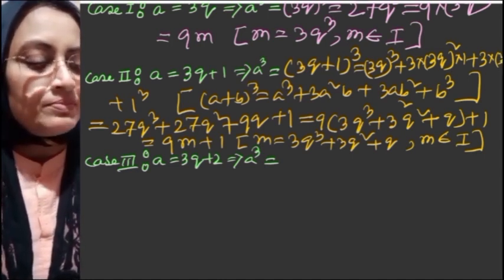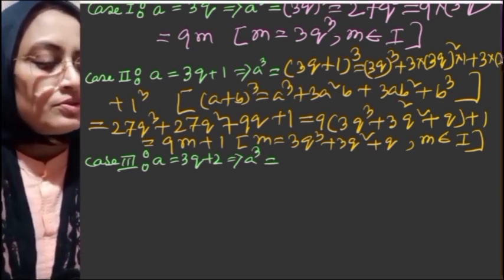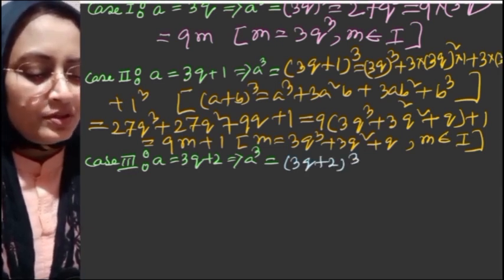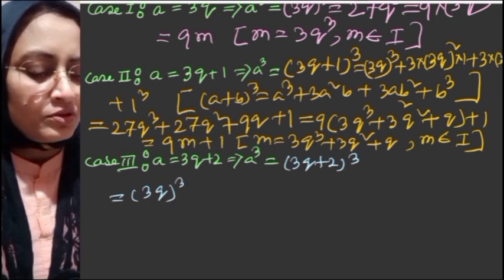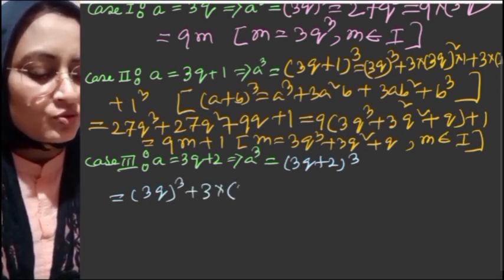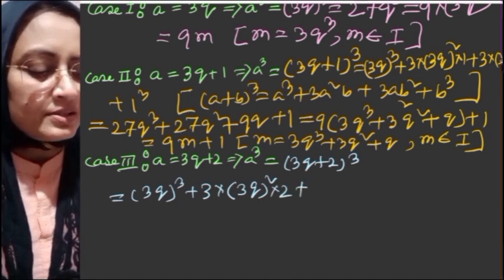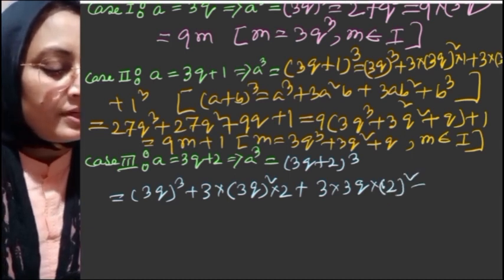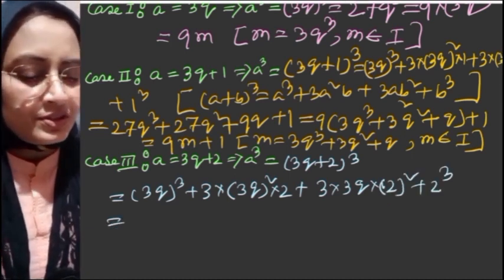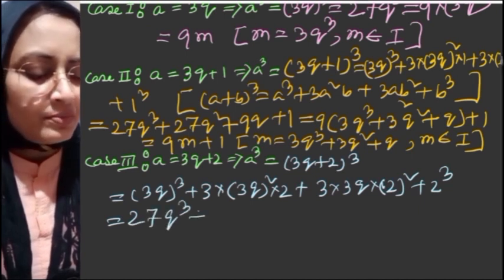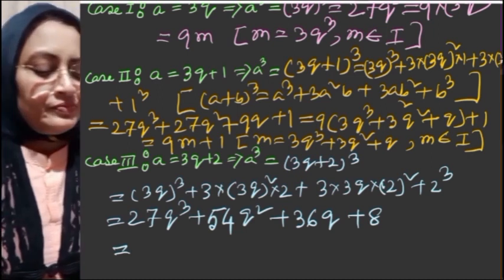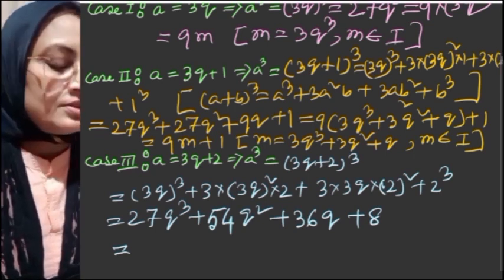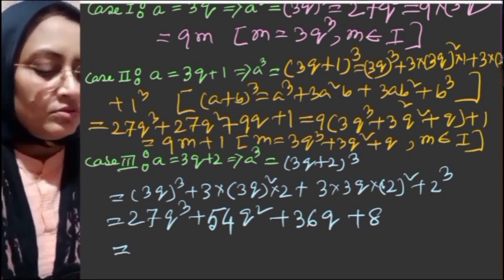Case III: If a equals 3q+2, then a³ equals (3q+2)³, which equals (3q)³ plus 3(3q)²(2) plus 3(3q)(2)² plus 2³. This equals 27q³ plus 54q² plus 36q.